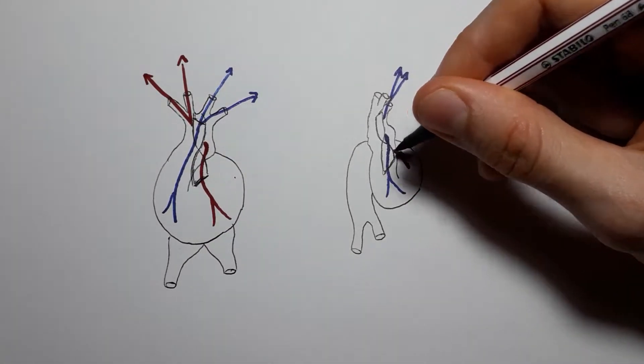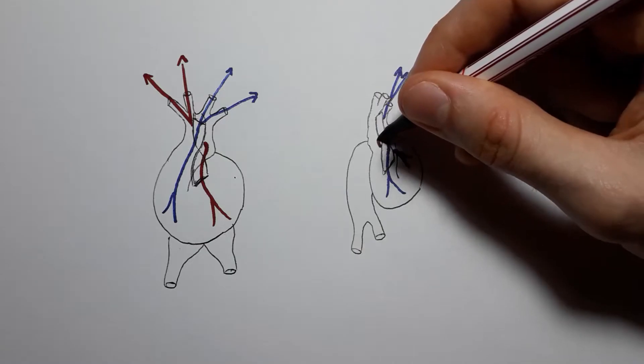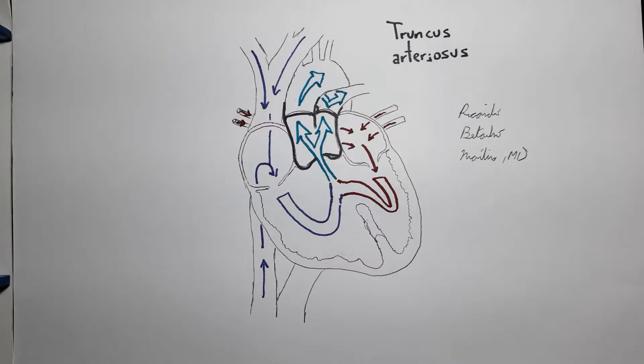We already know that the simple failure of the aortic pulmonary septum to develop leads to truncus arteriosus, when there is no separation between the aorta and the pulmonary trunk, leaving a single large vessel where oxygenated and deoxygenated blood get mixed.